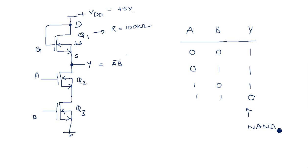NAND is nothing but AND complement. In AND, when both inputs are 1 the output is 1; in remaining cases output is 0. NAND is the complement of that. We are not taking any complemented form in the input — the circuit itself gives the complement, which is nothing but NAND operation. If you want to create an AND operation, the output of this circuit must be passed through an inverter. This is NAND using NMOS.